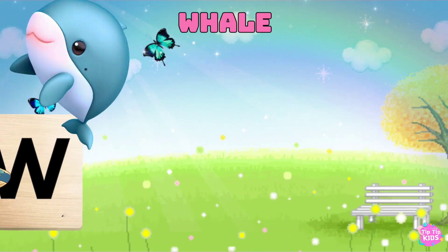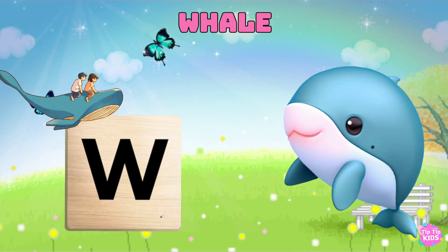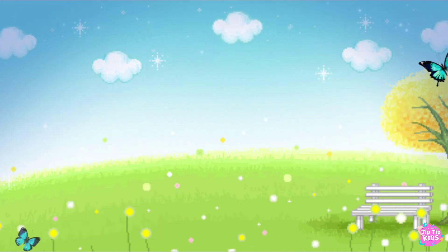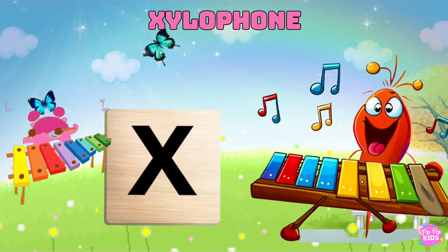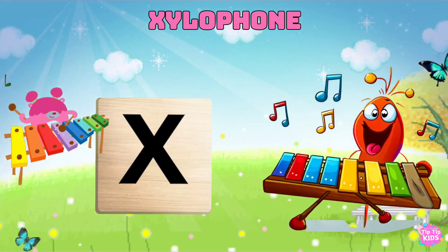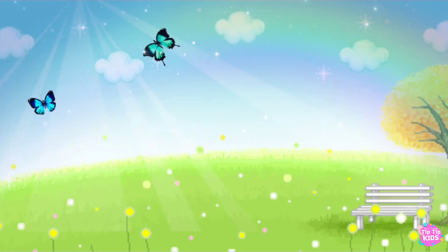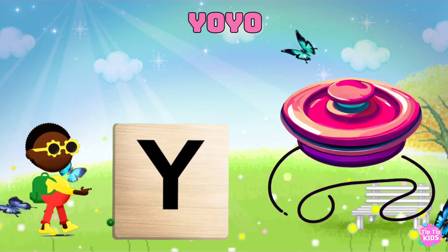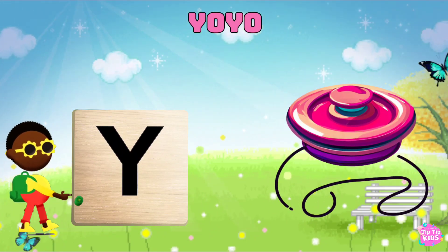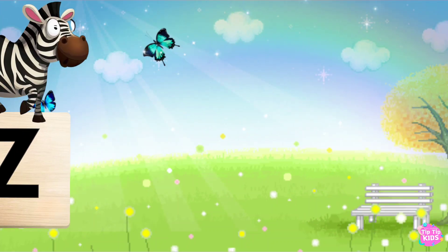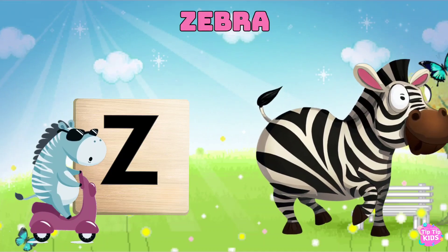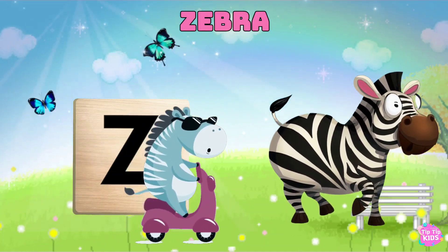W is for Veil. W, Veil. X is for Sea Life. X, Sea Life. Y is for Yo-yo. Y, Yo-yo. Z is for Zebra. Z, Zebra. Z, Zebra Z. Zebra.